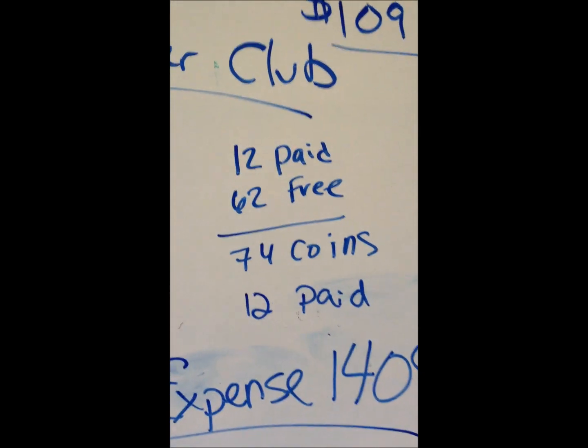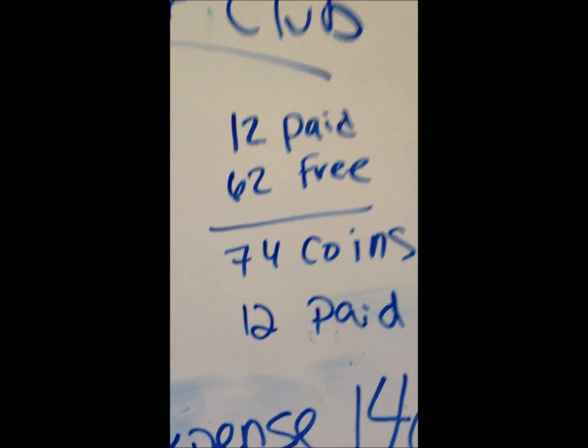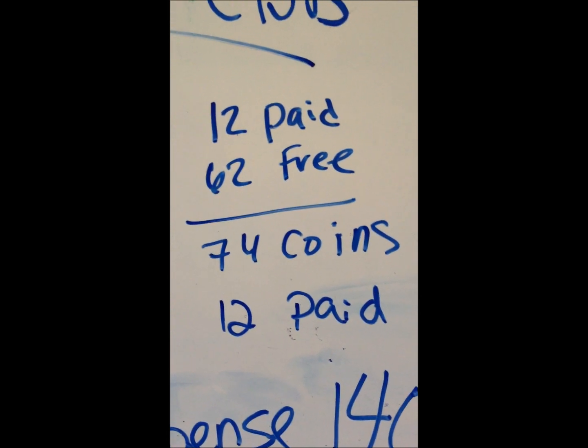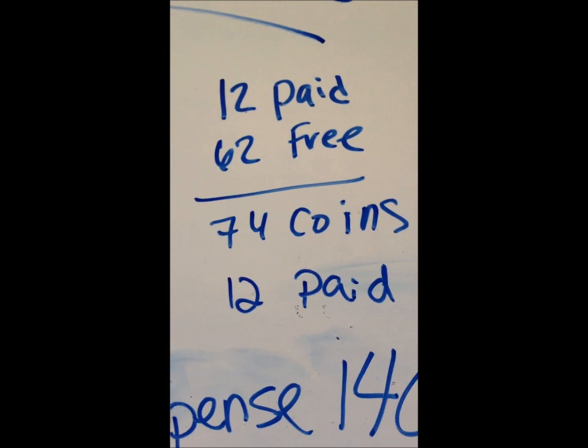So what happens, folks, what happens? I drew it out on the board. Twelve paid, sixty-two free, seventy-four coins. Twelve paid, $109.95 plus taxes, $117 in Washington State. I don't know where you live, but that's fourteen hundred dollars cash out of my pocket. And I'm running a business here, so you think I got some tax deductions? I do.